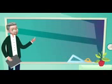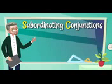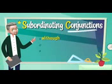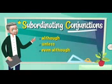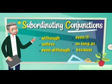Hello everyone, this is Mr. P. On today's lesson we're going to take a look at subordinating conjunctions — like although, unless, even though, even if, as long as, and because. So let's get started.